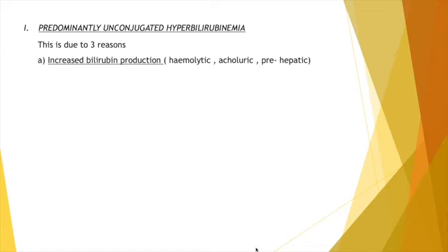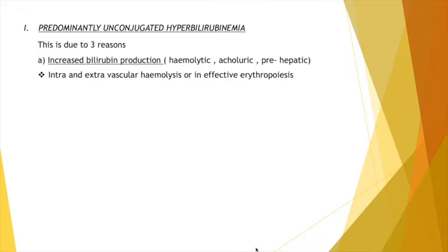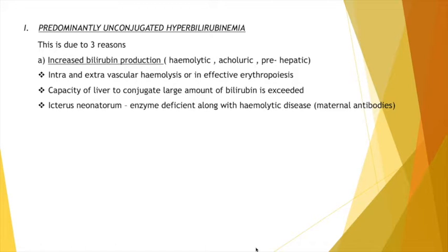Increased bilirubin production is due to several hemolytic diseases — excessive red cell destruction. There will be an increase in the production of bilirubin. It can be intra- or extravascular hemolysis: intravascular means the breakdown of RBCs is happening inside the vessel, and extravascular means it is occurring in the liver, spleen, bone marrow, etc. Due to increased red cell destruction, there is increased production of bilirubin.